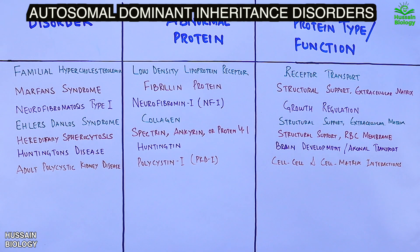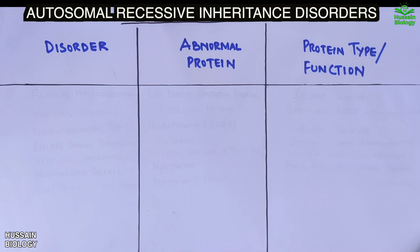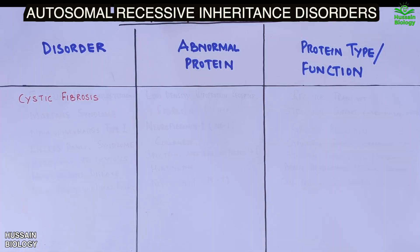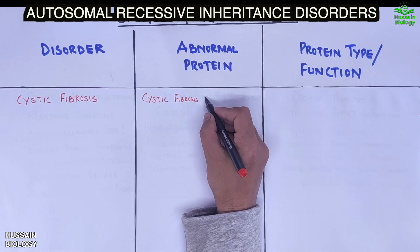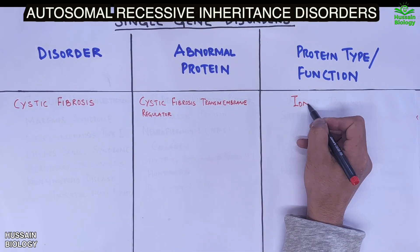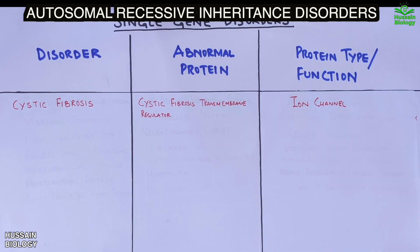Now let's get to autosomal recessive disorders. First is cystic fibrosis, where we have a mutated CFTR protein. This mutation leads to several symptoms that mostly affect the lungs, pancreas, liver, kidneys, and intestine. A detailed video about cystic fibrosis is linked in the description.